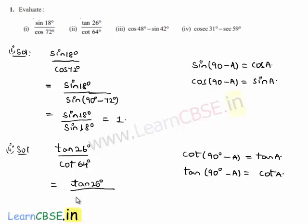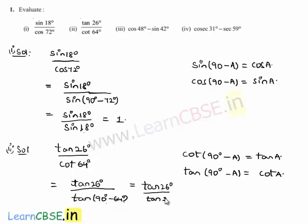Converting the denominator: cot 64 degrees becomes tan of 90 degrees minus 64 degrees, which is nothing but 26 degrees. As numerator and denominator are the same, tan 26 degrees by tan 26 degrees will be equal to 1.